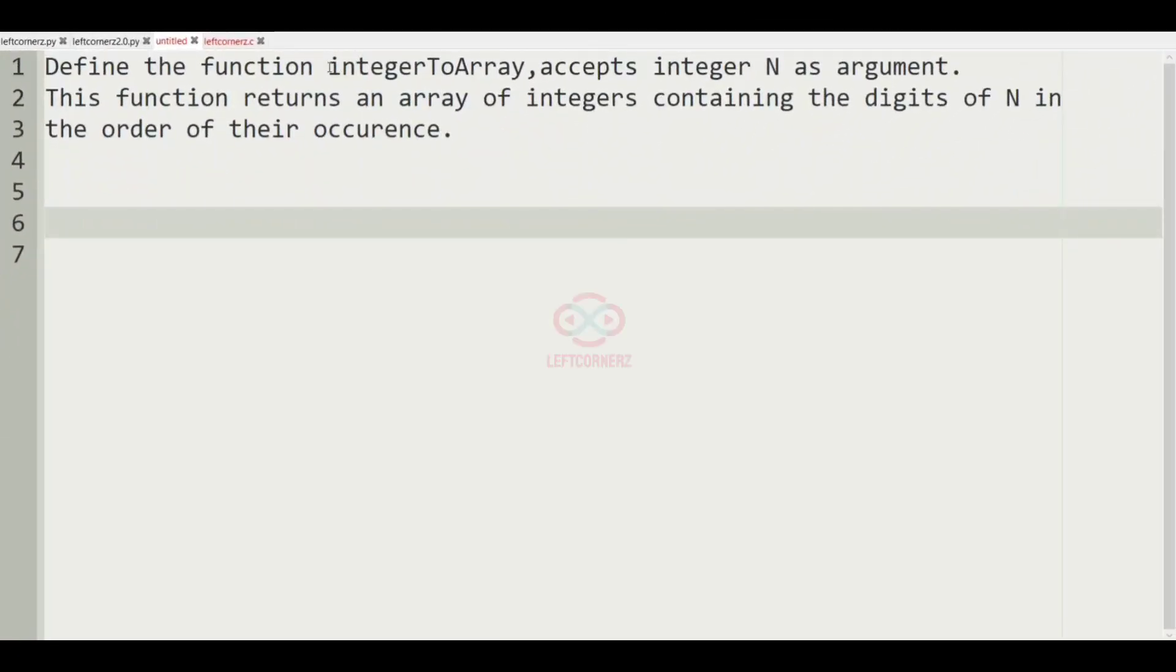First, we understand our question. We have to define the function integerToArray which must accept the integer N as argument, and this function returns an array of integers containing the digits of N in their order of occurrence.